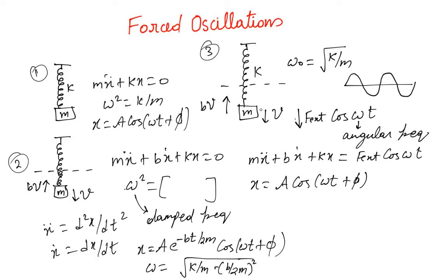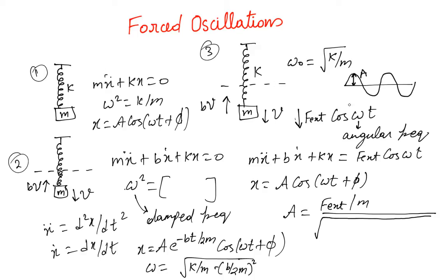The amplitude A is given as F_external divided by m, over the expression involving (ω² − ω₀²) — I'm writing the solution directly rather than solving it, as that is beyond the level of this course. So this is how x changes with time for this kind of oscillator, and A is the maximum amplitude.